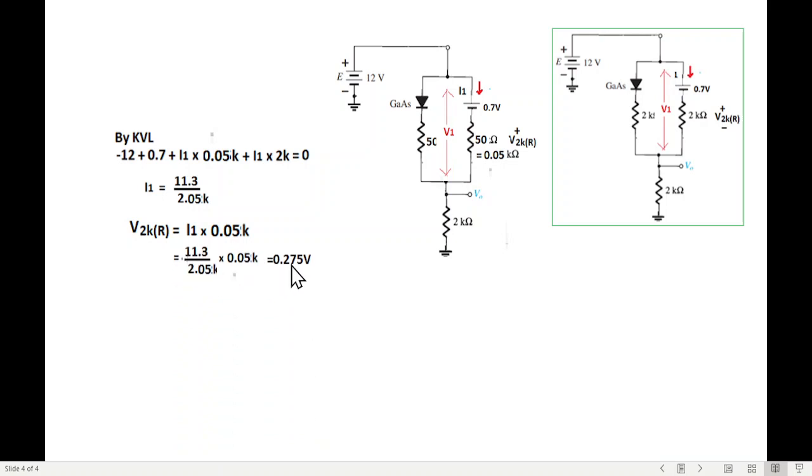And this is 0.275 volt. Now 0.275 volt here and 0.7 here will give us v1.